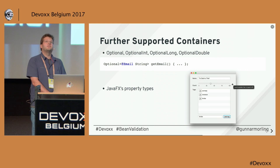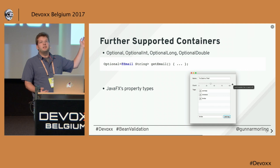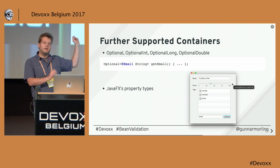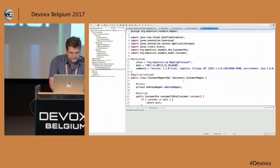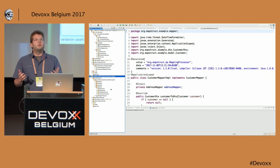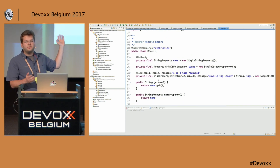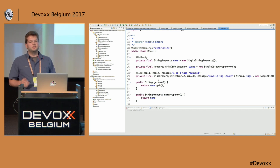There's also support for other types. Java 8 has the new Optional type, used as a return type for a method that might return a value or not. For example, a getEmail method that may return a string — if the value is present, it should be a valid email address. I can express this by putting the new @Email constraint on the type argument. We also have support for all the JavaFX property types. In JavaFX you don't work with normal types like int, long, or String, but with their own hierarchy — StringProperty, ListProperty, and so on. Now we can put Bean Validation constraints on those JavaFX property types as well.